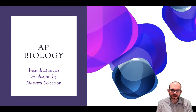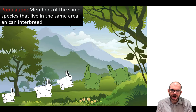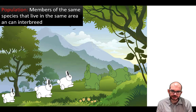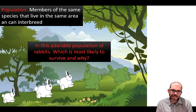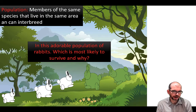Hi everyone, this video is an introduction into evolution by natural selection for AP Biology. I want us to start by looking at a population of members of the same species that live in the same area that can interbreed. For our purposes here, we're going to look at rabbits. Some of them are green, some of them are white. In this adorable population, which do you think is going to be most likely to survive and why?